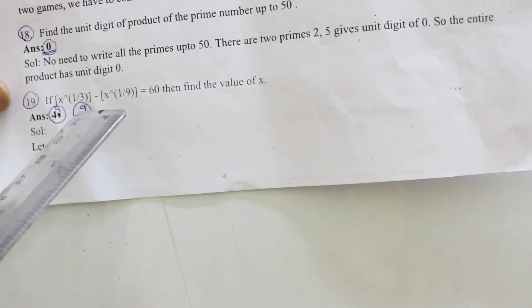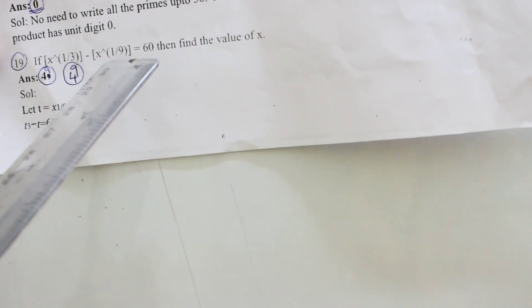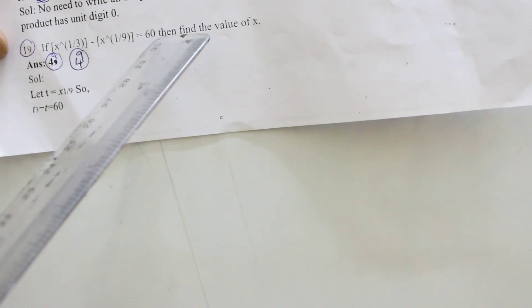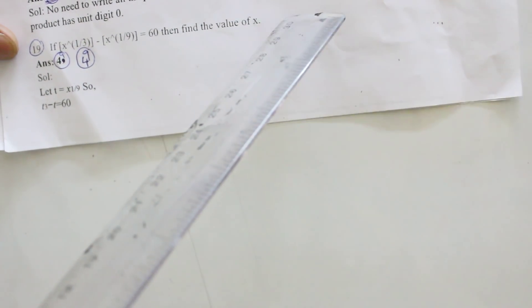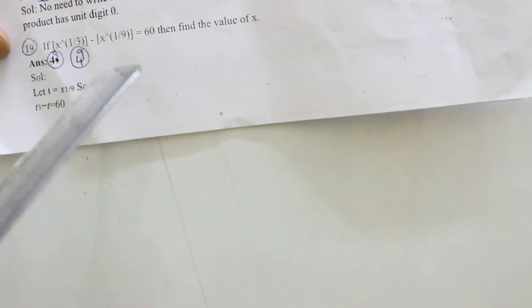19th one: If X power 1 by 3 minus X power 1 by 9 that equal to 60, then find the value of X. Answer is 4 power 9.